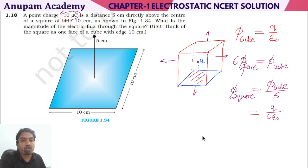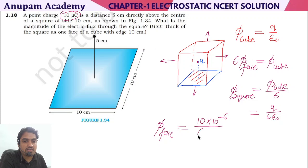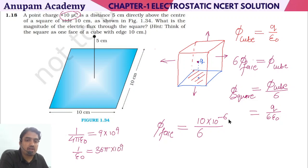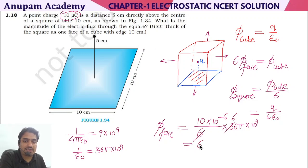That equals Q by six epsilon naught. We have the charge value given as 10 microcoulombs. So flux through the square equals 10 × 10⁻⁶ divided by 6, multiplied by 1/epsilon naught. We know that 1/(4π epsilon naught) = 9 × 10⁹, so 1/epsilon naught = 36π × 10⁹. Substituting, we get 6π × 10⁹ × 10⁻⁶.